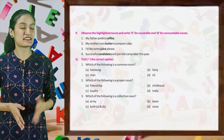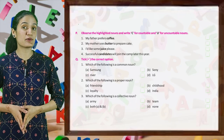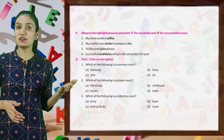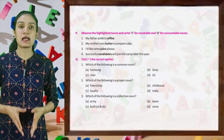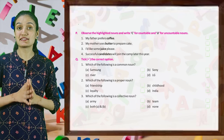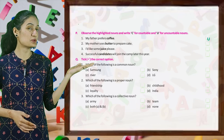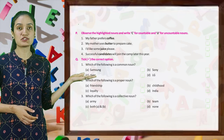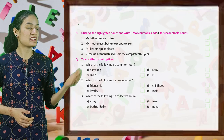Now kids, observe the highlighted nouns and write C for countable and U for uncountable nouns. First: my father prefers coffee — coffee is an uncountable noun, so you will write U. In the same way, identify countable and uncountable nouns by yourself.